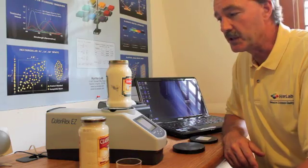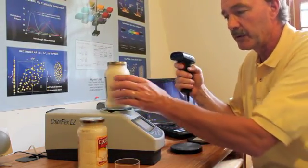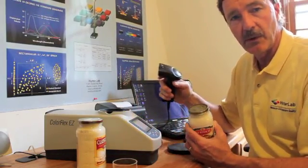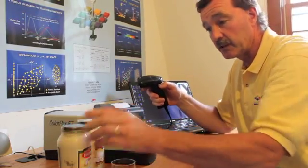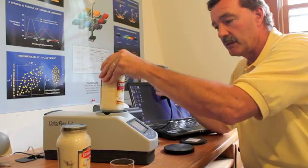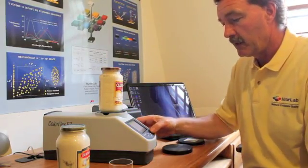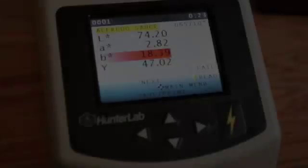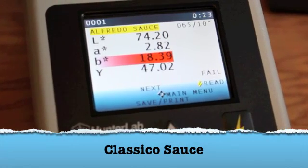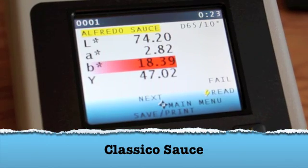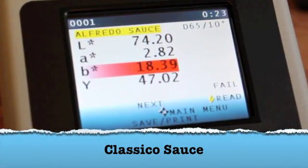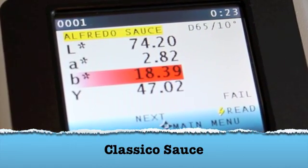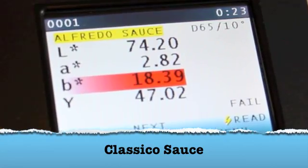Another useful feature is the barcode reader, where we can very simply use the barcode information to include that with our color data. Now measuring our second sample, we simply place it and take a reading, and the data is presented. On the second screen, we've taken a measurement of the Classico sauce, and it displays the B values being 18 units and out of tolerance. This is about 2 units larger than the first sample, which was our Bertolli sauce.